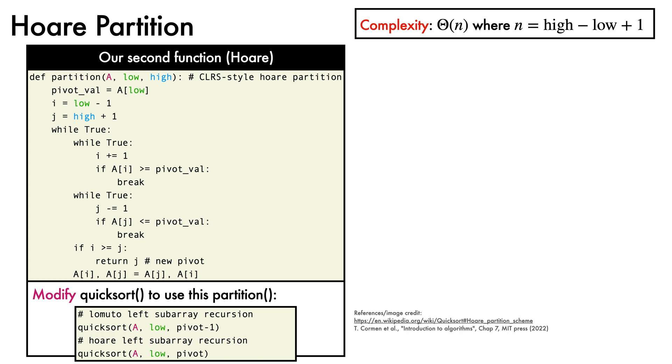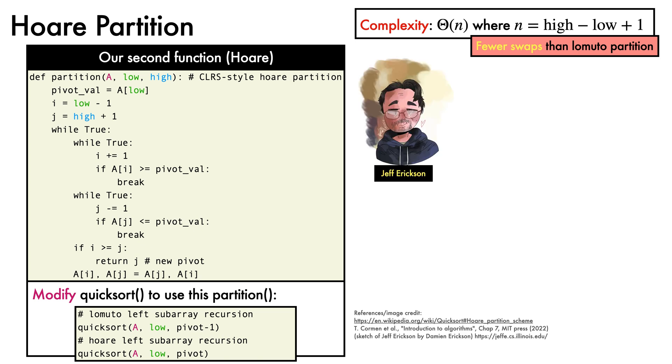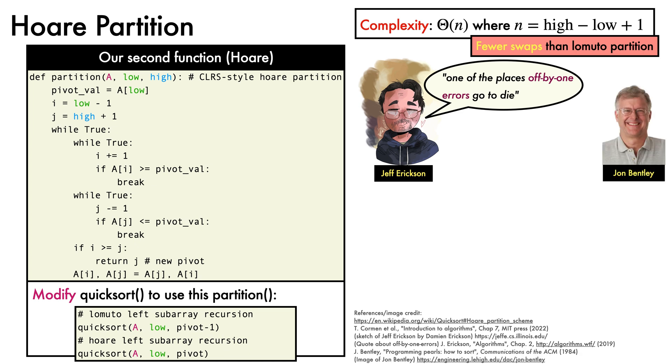Hoare partitioning is often used in implementations because it requires fewer swaps than the Lomuto partition function. However, it is perilously easy to make a mistake when implementing Hoare partitioning. Algorithms legend Jeff Erickson says that Hoare partitioning is one of the places off-by-one errors go to die. John Bentley, author of Programming Pearls, says that he once spent the better part of two days chasing down a bug hiding in his partitioning loop.